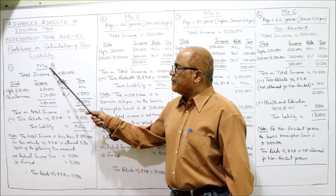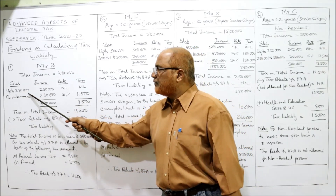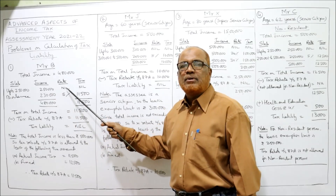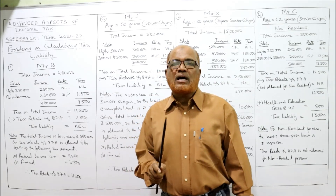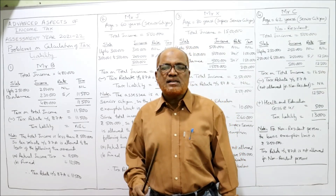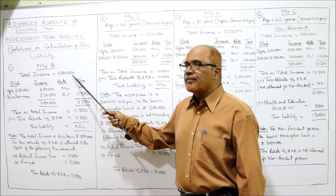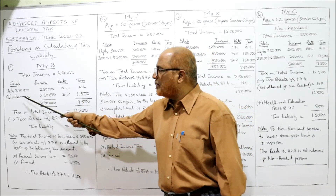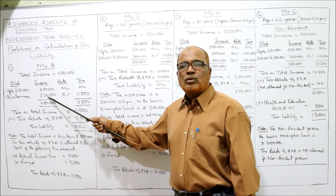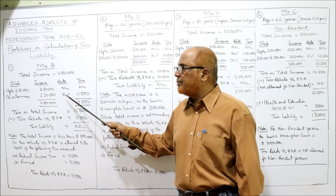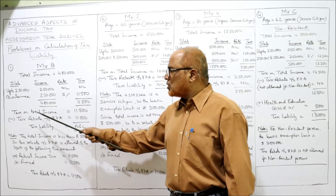Mr. B's total income is ₹4,80,000 and the basic exemption limit is ₹2,50,000. Up to ₹2,50,000, the rate of tax is nil. The next slab goes from ₹2,50,001 to ₹5,00,000, but our income is only ₹4,80,000, so I'm taking the balance: ₹4,80,000 minus ₹2,50,000 equals ₹2,30,000. The rate of tax for the second slab is 5%. So 5% of ₹2,30,000 equals ₹11,500. Tax on total income: ₹11,500.